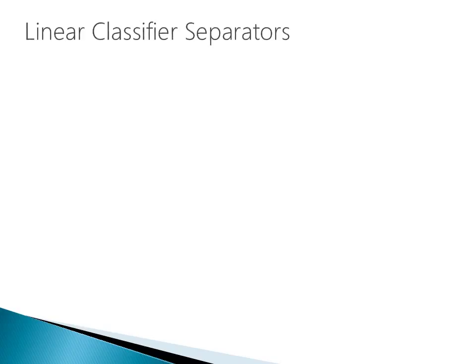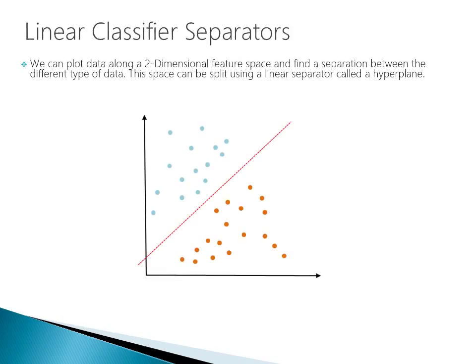Before we can really get into the nuances of Support Vector Machines, we have to introduce a couple of concepts. The first thing we're going to do is plot data along a two-dimensional feature space. A feature space is just another fancy term for saying we're going to plot an x-y coordinate. We plot our data along this feature space, and we're going to find a separation between the types of data — a classification exercise. What we're trying to do is split this space with a line, and this line is a linear separator called a hyperplane.